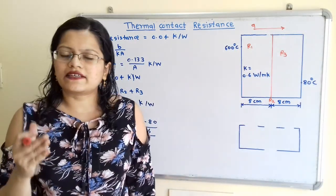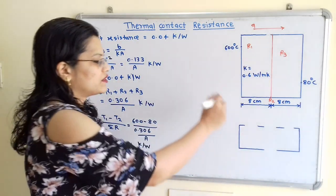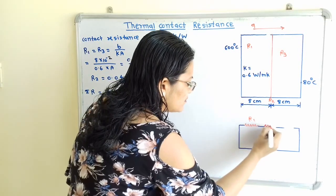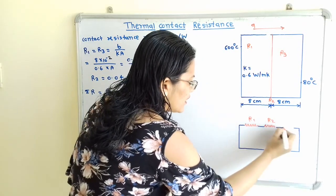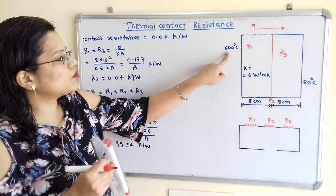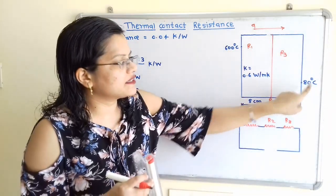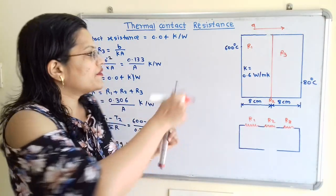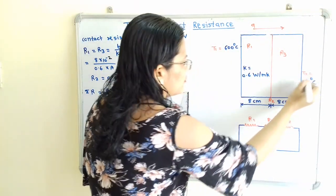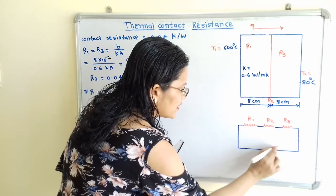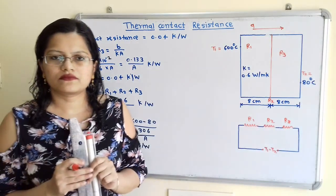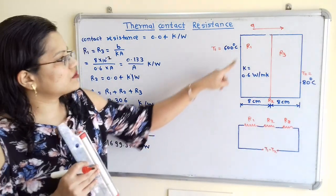We will draw the electrical analogous circuit showing these three resistances in series: R1, then R2, then R3. This heat transfer process takes place between two temperatures — 600 degree Celsius and 80 degree Celsius. We will call these T1 and T2 respectively, so the driving temperature difference is T1 minus T2.